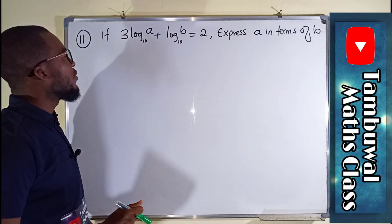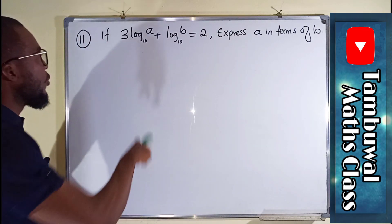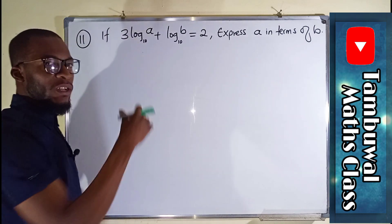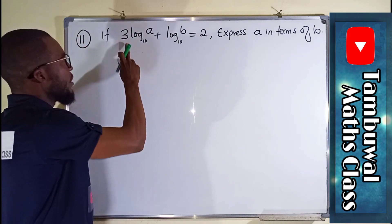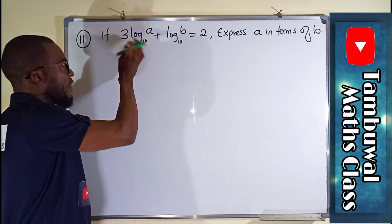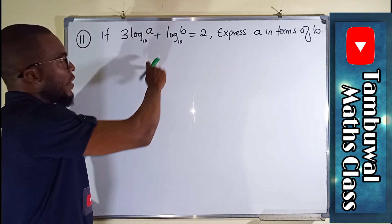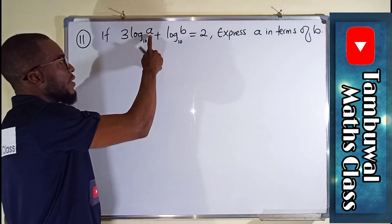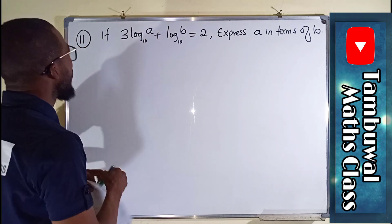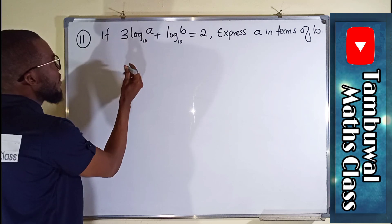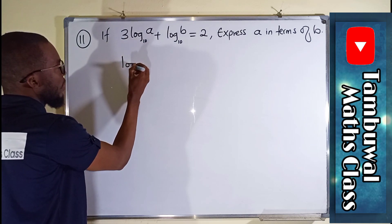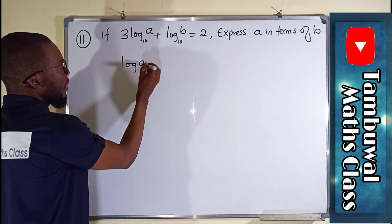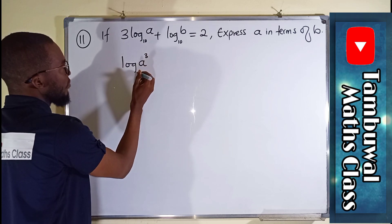Let us apply some laws of logarithm here. You know we solved another question previously. If you have any constant multiplying your log, that constant can serve as the power of that number which you are taking log of. In this case we have A, so this can be written as log A³ base 10.